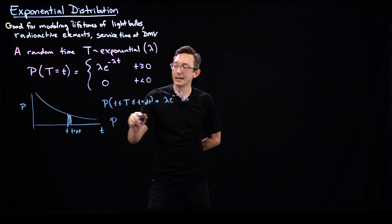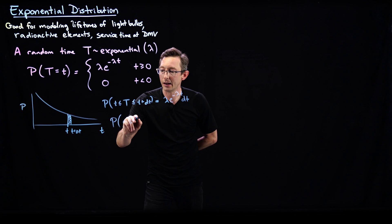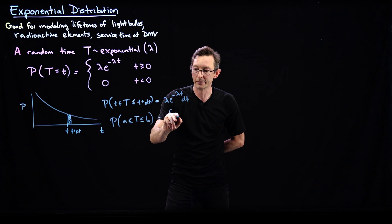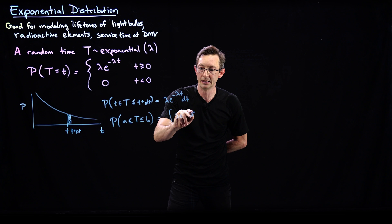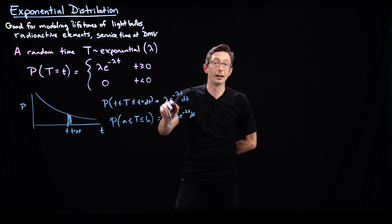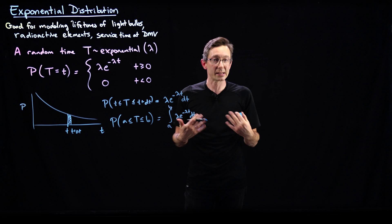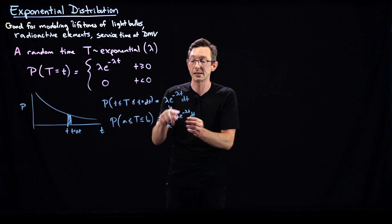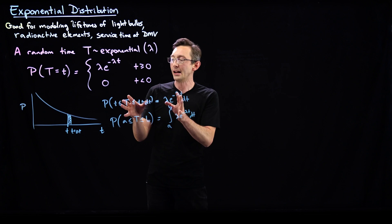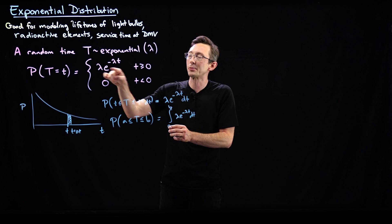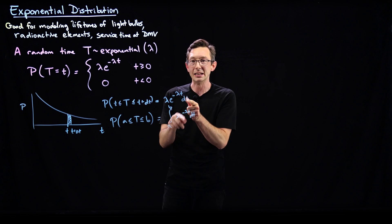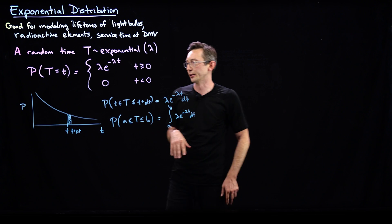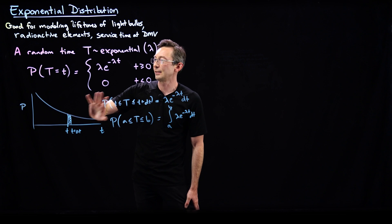The probability that this event happens between times a and b is equal to the integral of the probability density function lambda e to the minus lambda t dt, integrated between a and b. This is how we work with continuous probability distributions. We can compute the probability that this time occurs in a range of times as the integral of this PDF. This probability is really for an infinitesimal sliver of time dt, just like in calculus.